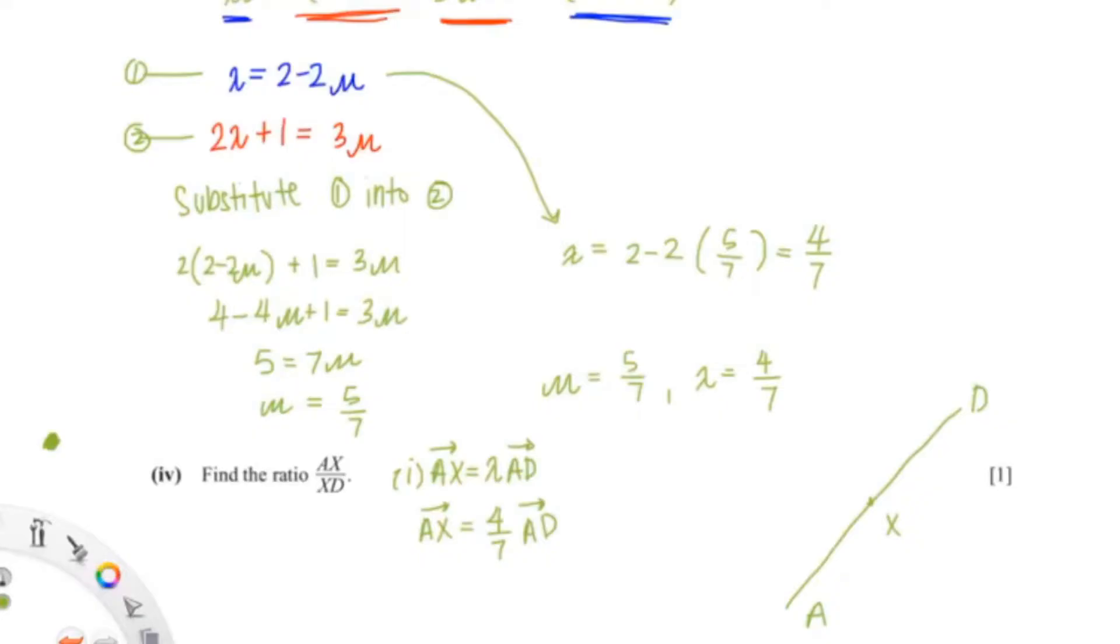So what we know now is A to X is 4 out of 7. So that's 4 and AD is 7. So now finding XD is very simple. You just subtract 4 from 7. So that would be 3.